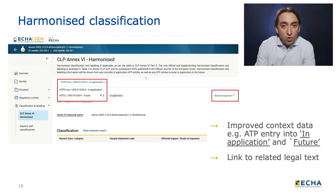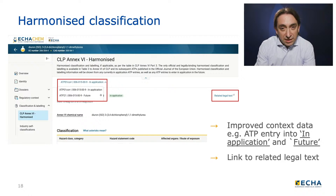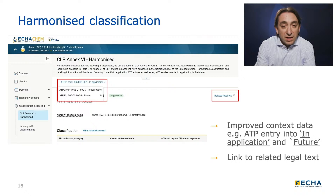This page covers the CLP harmonized classification of the substance. At the top, there is a tab that displays the upcoming ATPs for the substance. For example, in this case, the current ATP is in force until August 2025, after which a new ATP becomes relevant. Whether this upcoming ATP has any changes for this substance can be seen by switching the tab from 'In Application' to 'Future.' You also have a link to the related legal text on the right side.